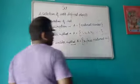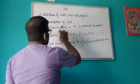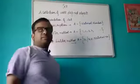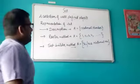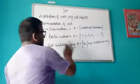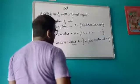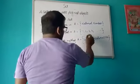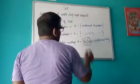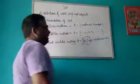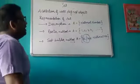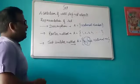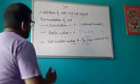To identify the difference: in the description method, we simply write a statement describing the set. In the roster method, we write the elements inside the set. In the set-builder method, we add the extra term — x such that x belongs to natural numbers.